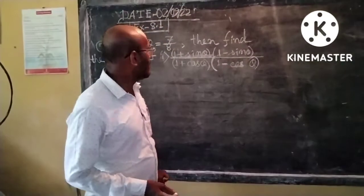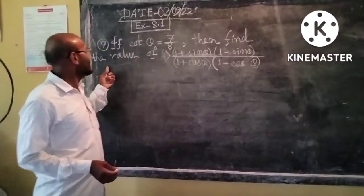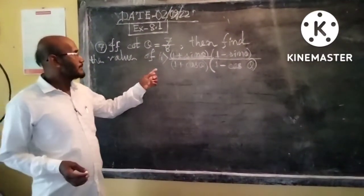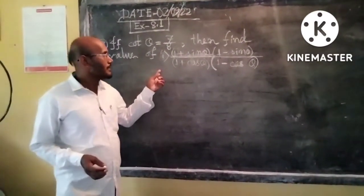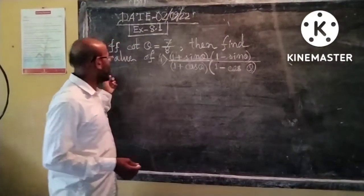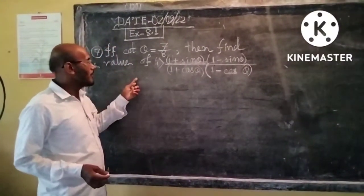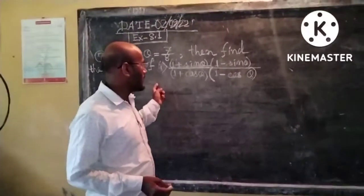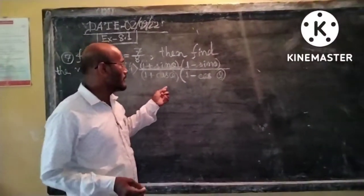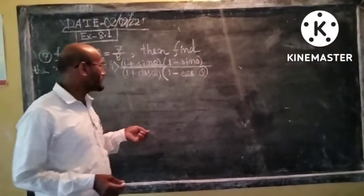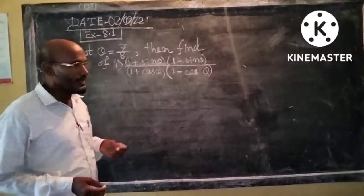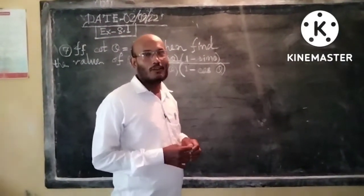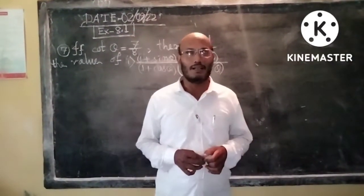Now question 8, equation 7: if cos theta equals 7 by 8, then find the value of: 1 plus cos theta, whole into 1 minus cos theta, divided by 1 plus cos theta, whole into 1 minus cos theta.